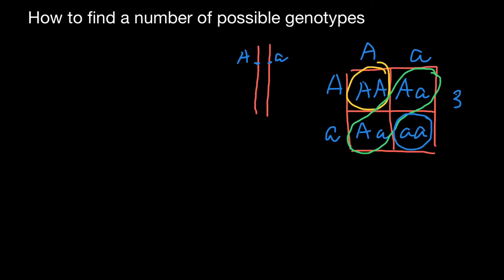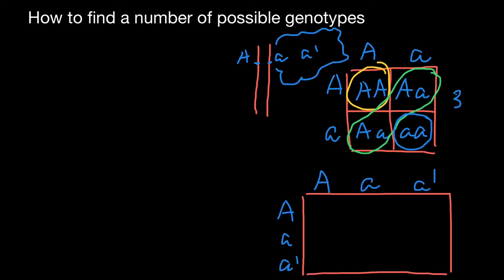But what if we have three alleles? Let's also think about this model. Let's say that here, I draw a cloud, which would represent a gene pool. We also would have allele A prime. So we have three alleles. Our variants would be as follows. Again, we draw a simple Punnett square.